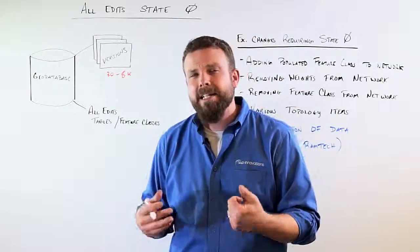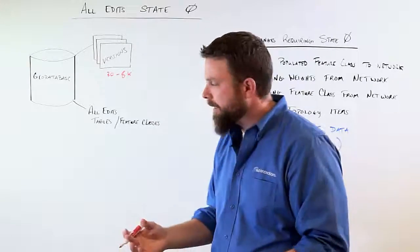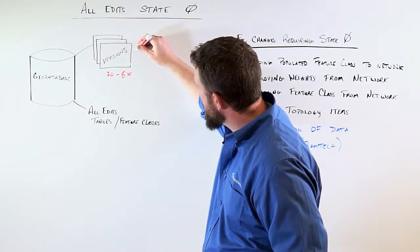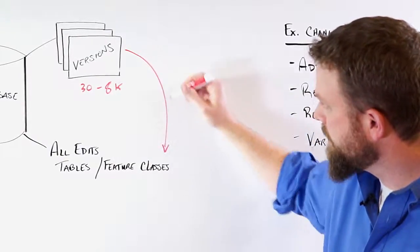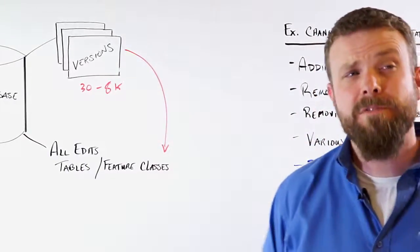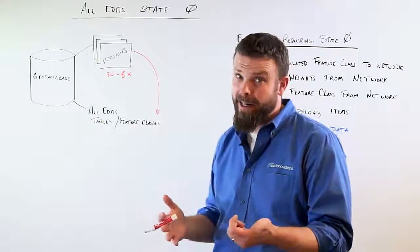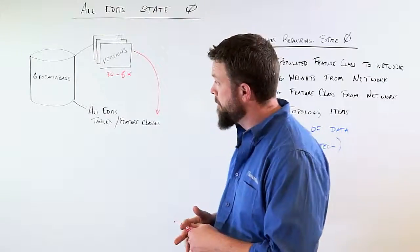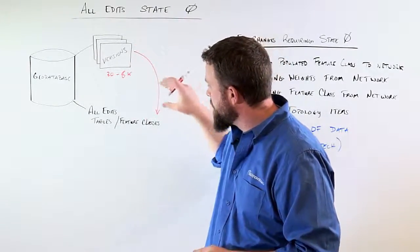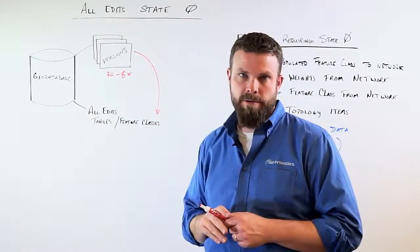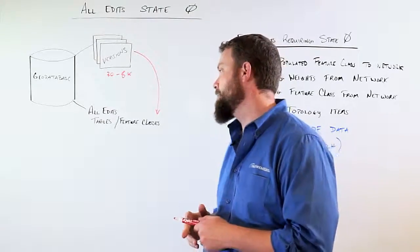So our all edit state zero uses automation along with the all edits product to extract these versions out into these feature classes all in one fell swoop. Plenty of error handling and things of course if there's any issues there, but the key is that we take all the data from the versions, place it into our format of the all edits tables and feature classes.